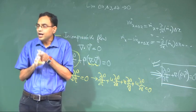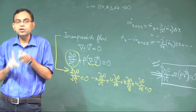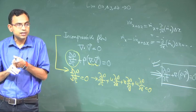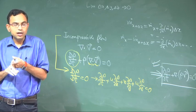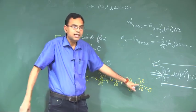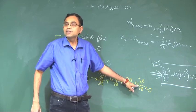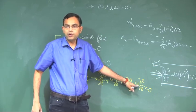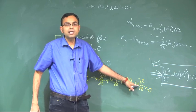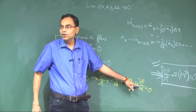So incompressible flow does not necessarily mean density is constant. If density is constant, this equation is trivially satisfied — density equal to constant is a special type of incompressible flow, but with variable density you can also have incompressible flow.